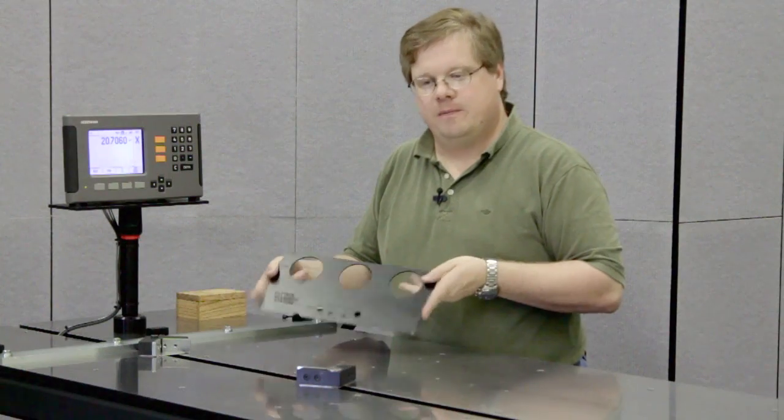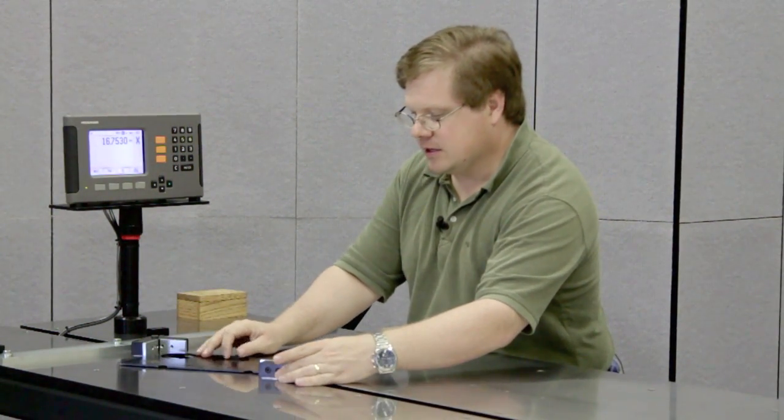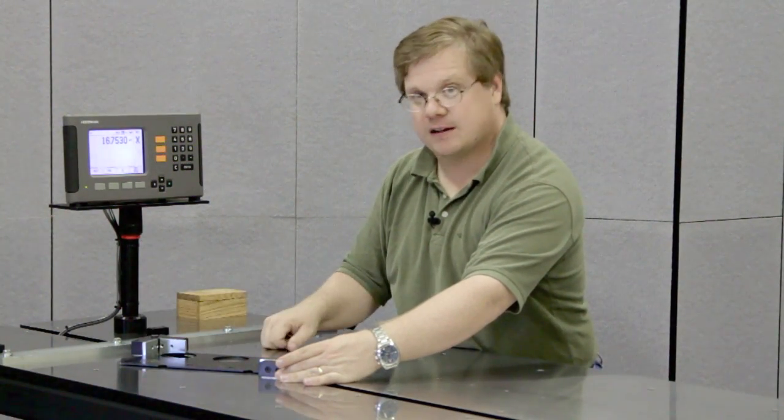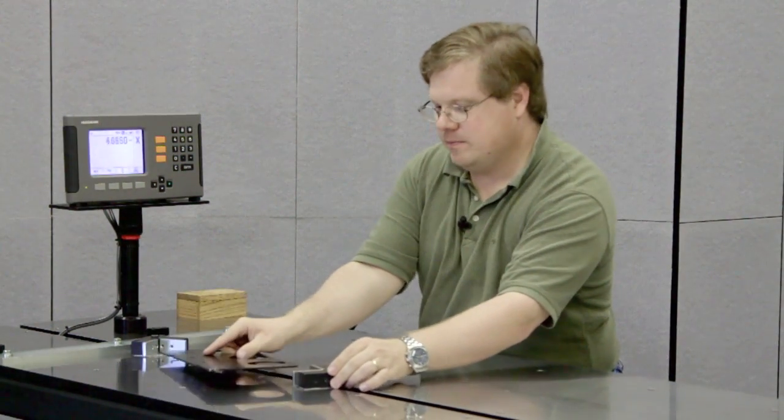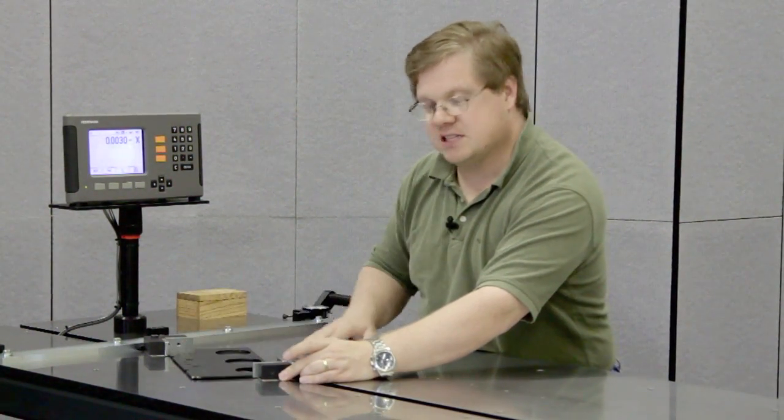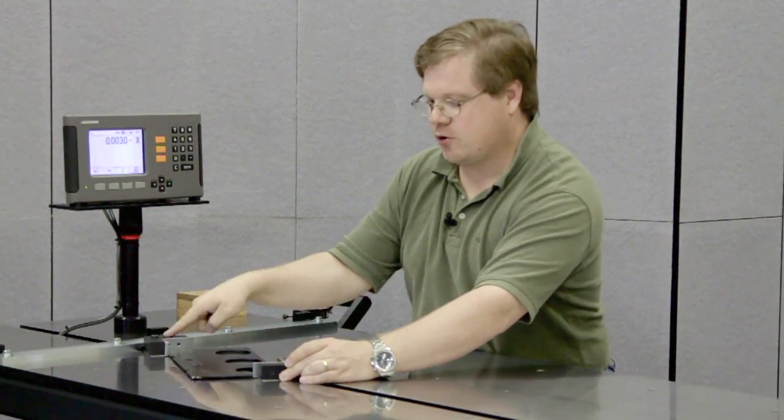So you take your square part, load it into the diagonal blocks so that opposite corners are in the blocks, and you just zero out the readout. Now put the opposite corners in the blocks, and the readout is going to show you the corner to corner variation from one corner to the other. So you can see how far out of square your parts are.